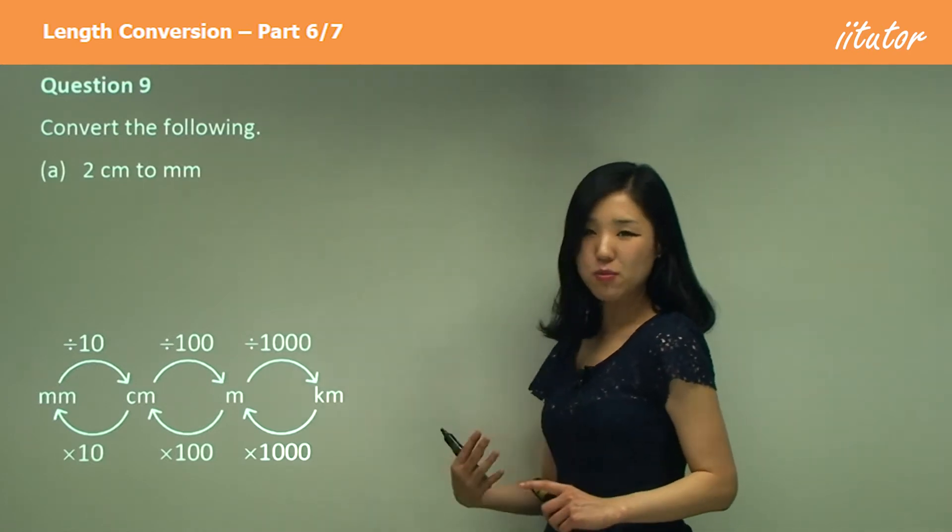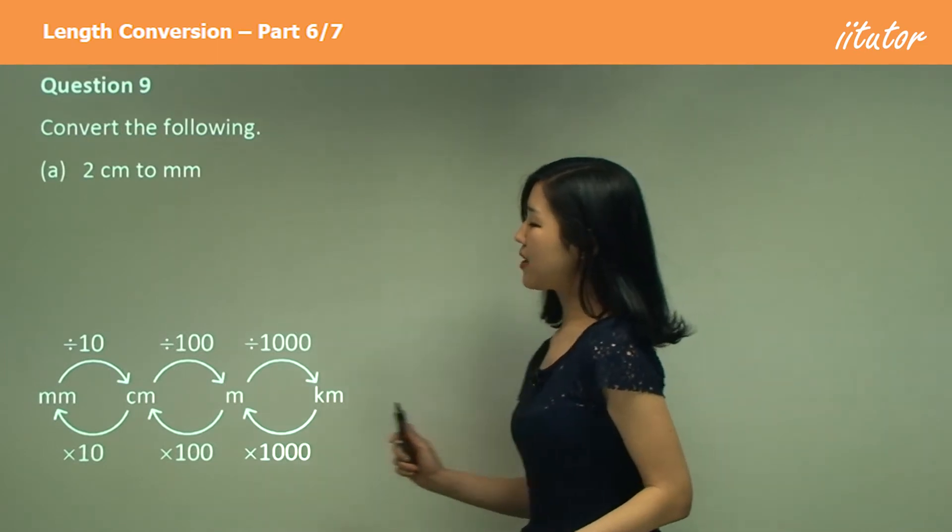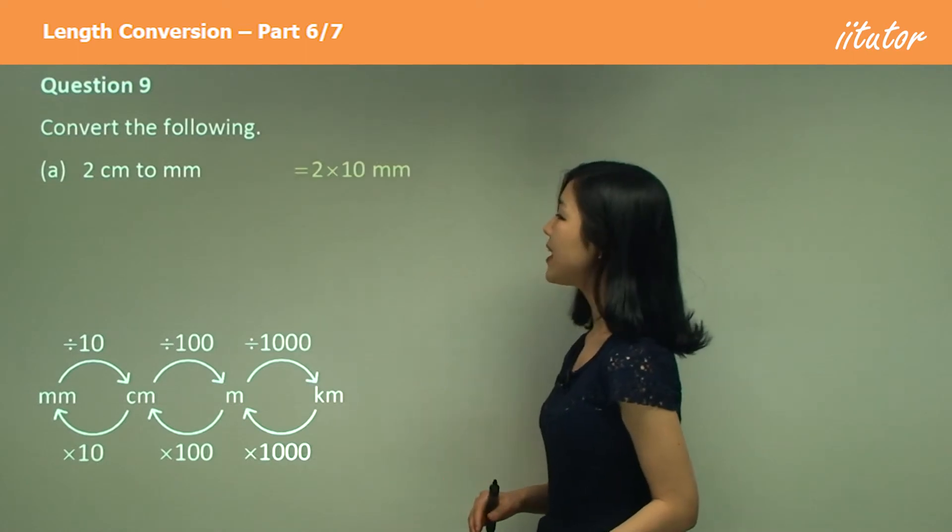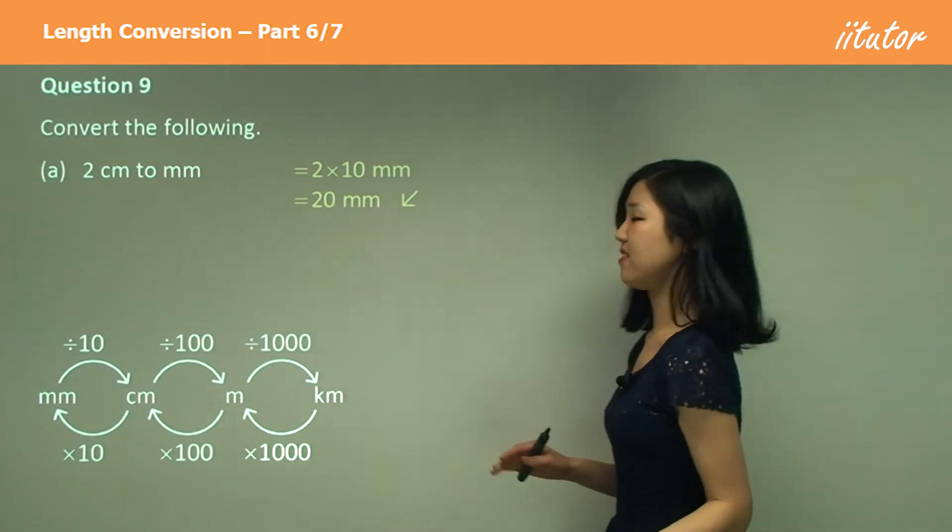So just pause and then check with my answer because they're very repetitive. So two centimeters to millimeters, we're going to be multiplying by 10. So times by 10, getting 20. Okay, so as long as you have this, it's pretty much the same thing. Really easy, isn't it?